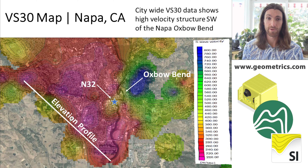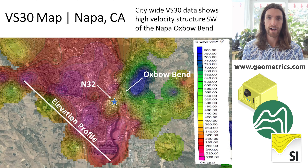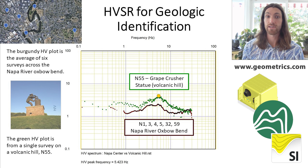There's clearly some sort of structure underneath that area along the Napa River, and it looks related to Monticello Ridge — it appears to extend down at depth. The Napa River is fairly straight but takes a notable jog downtown right at this higher-velocity section, forming the Oxbow bend. We can use HVSR to identify or lend evidence to what that structure might be.